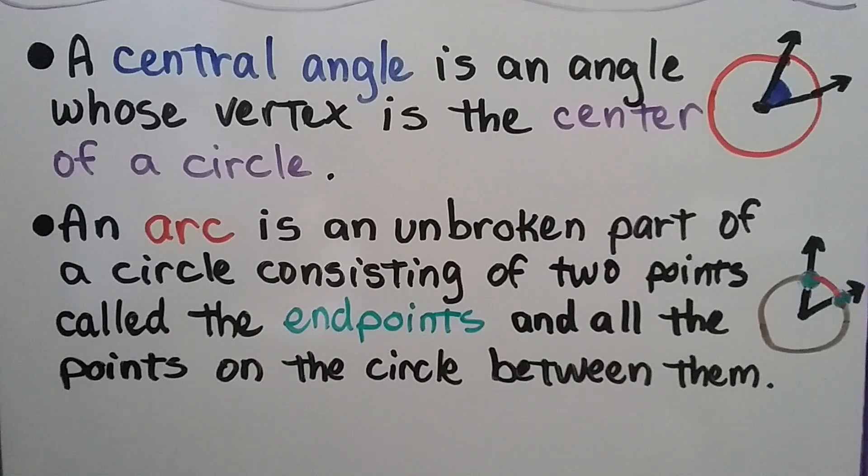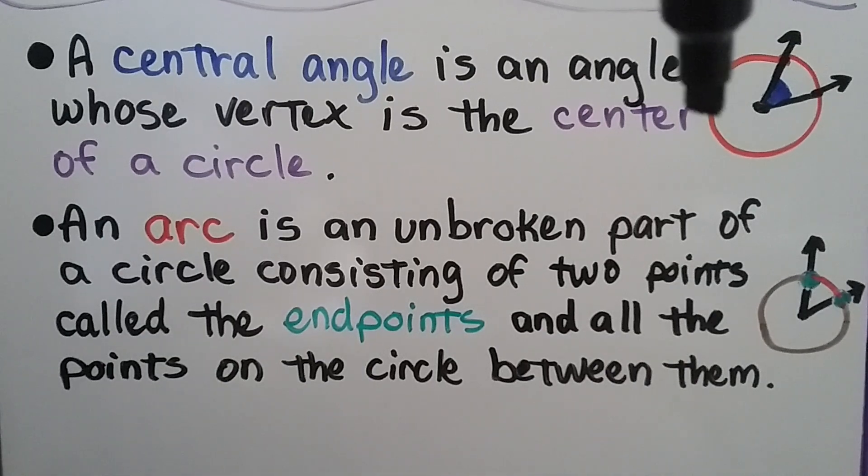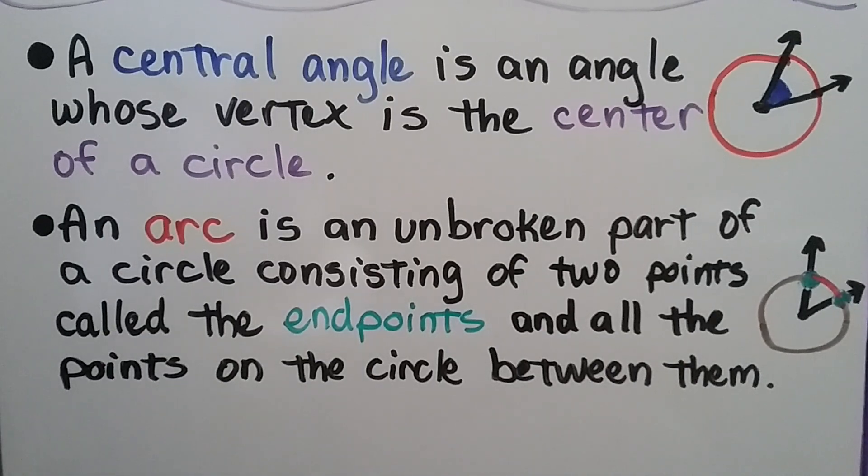A central angle is an angle whose vertex is the center of a circle. So right here, this blue part is the central angle. And right here is its vertex. It's the center of the circle.